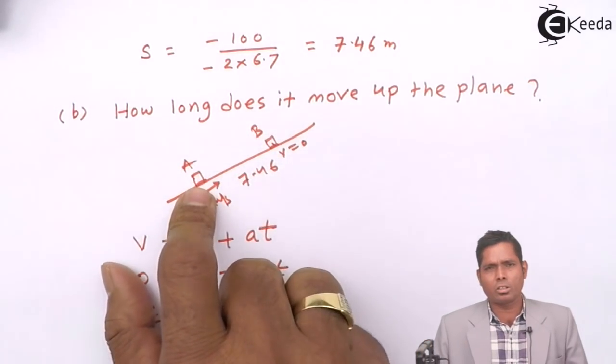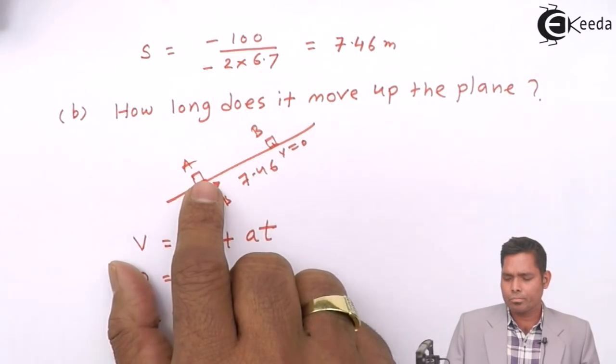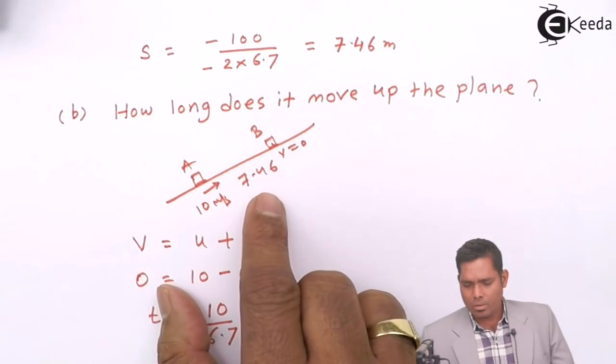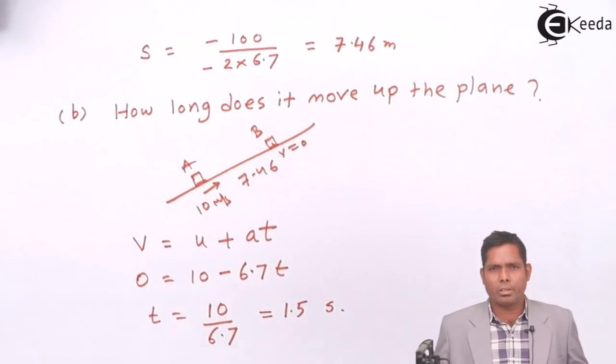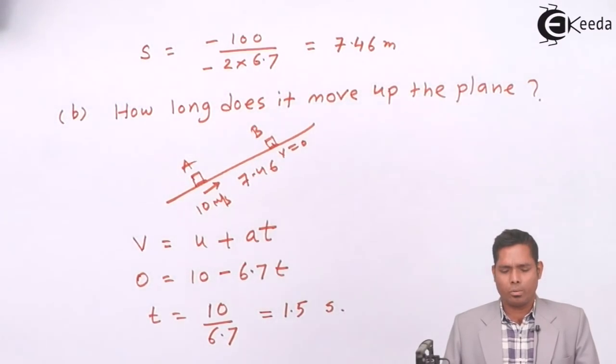And what is the velocity at this point? Then I will use V = U + AT equation again. So you will try that at home. These are the answers for this question. Thank you very much.